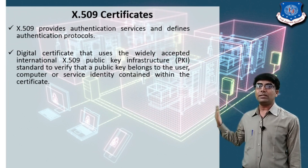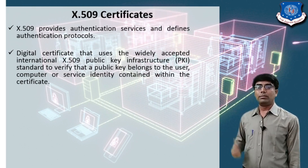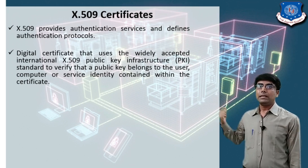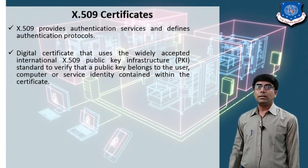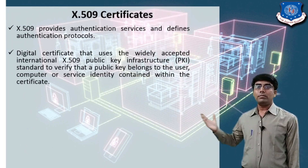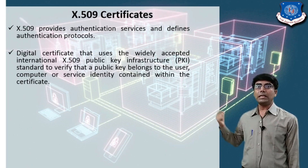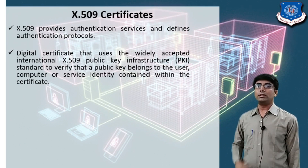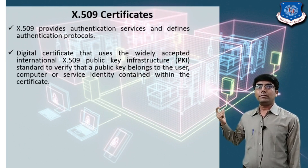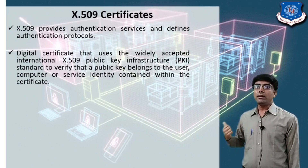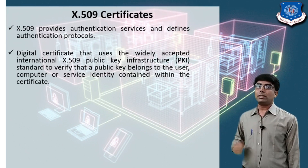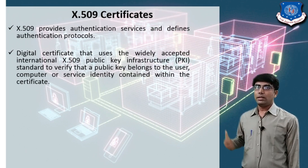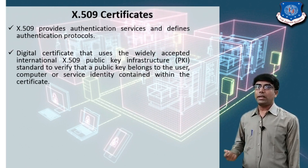There are various ways to achieve mutual authentication, and one of those ways is X.509 certificates. As you know, there are two types of keys — the public key and the private key — formed as a pair. One key is used for encryption and the other key from the same pair is used for decryption.